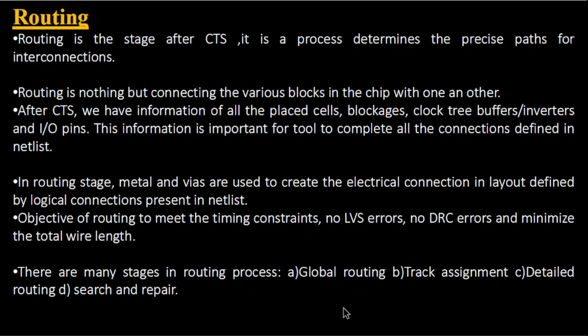There are many stages in the routing process: global routing, track assignment, detailed routing, and search and repair. The goals of routing are minimum routing area, minimum congestion hotspots, no LVS error, no DRC error, meeting the timing DRCs, and minimizing the total wire length.